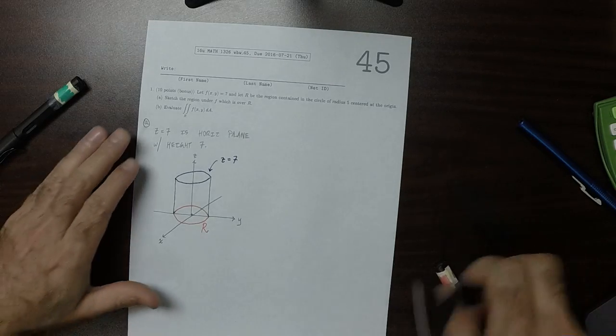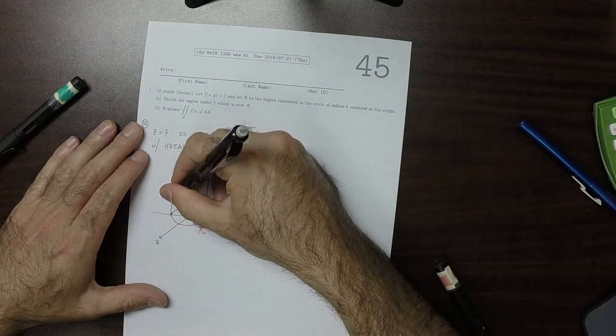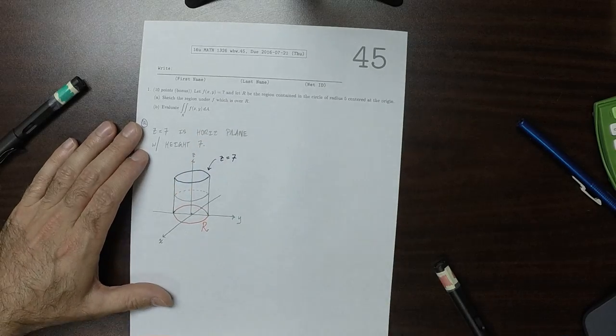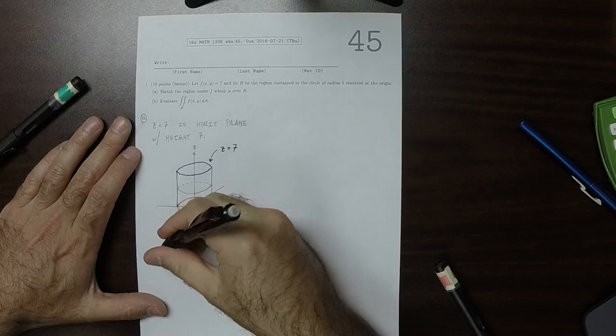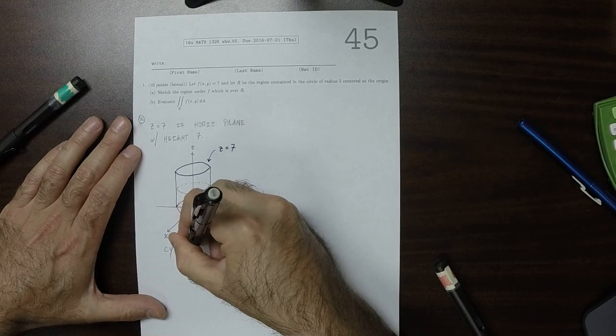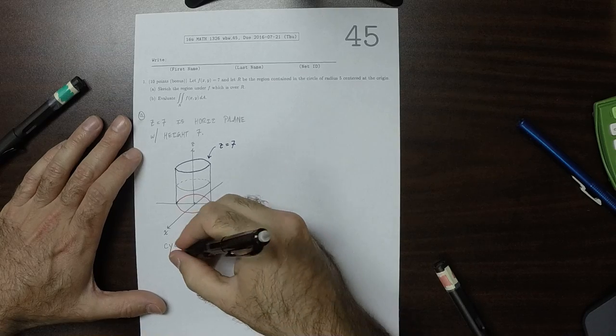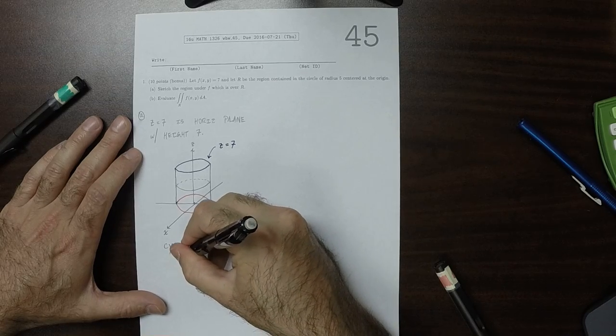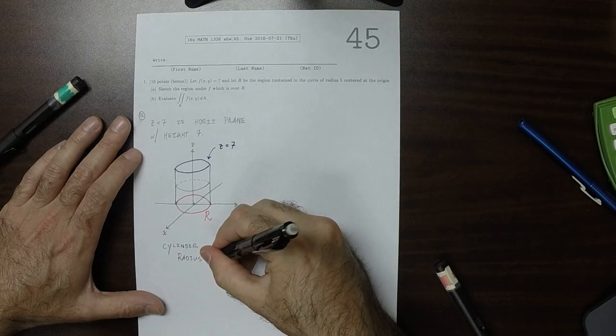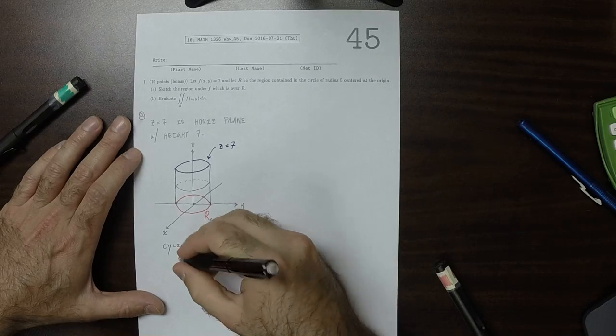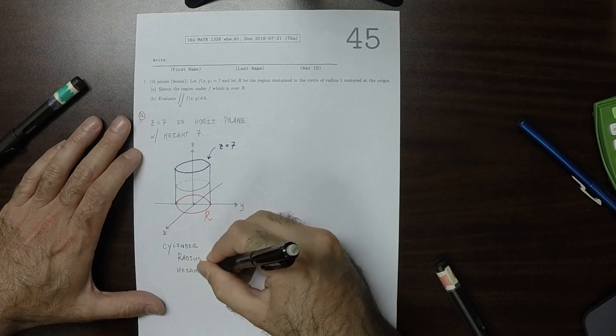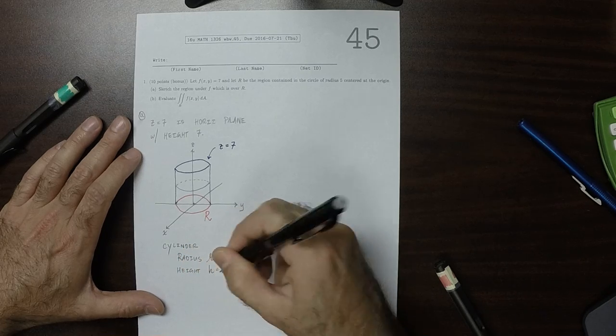Of course, this shape is a cylinder. This is a cylinder that has radius 5 and height 7.